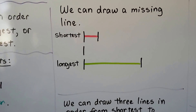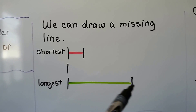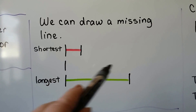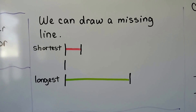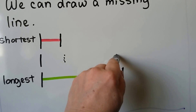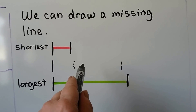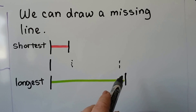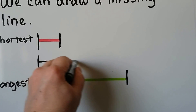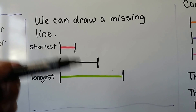We can draw a missing line. The red line is the shortest and the green line is the longest. It's looking for one that is in the middle, in between the shortest and longest. We can draw a line anywhere in this area and it will be in between the shortest and longest. So we can draw it anywhere in there and it is in the middle of the shortest and longest.